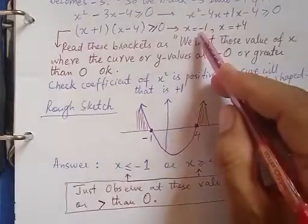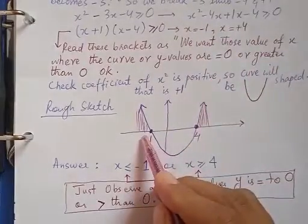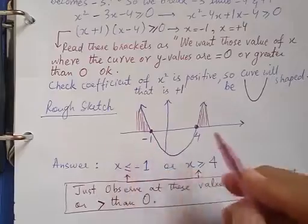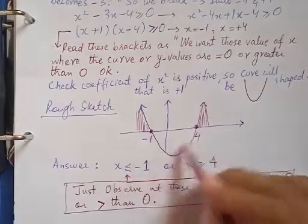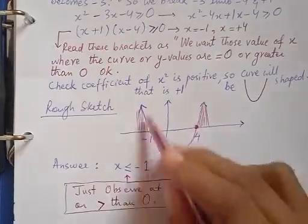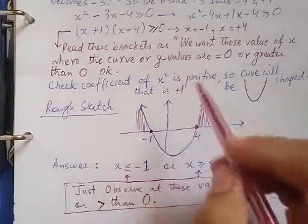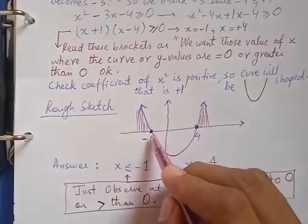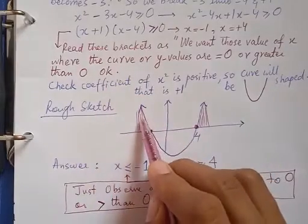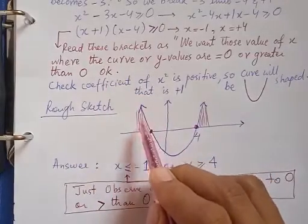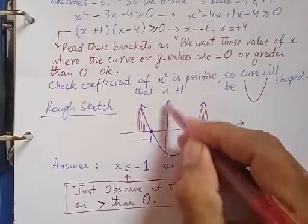We have one value of x as minus one and the second as four. With minus one on the left side and plus four on the right side, this will be the U-shaped curve because x-squared is positive. Right now in this graph we need such values of y where the curve, meaning the y-values, satisfy our inequality.